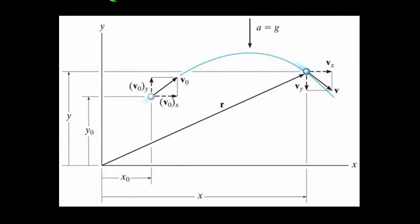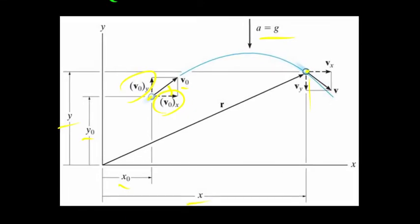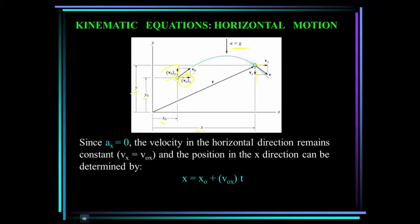Here is a particle projectile at position x0, y0, released with a velocity v0. We have the components of velocity in each direction — just like a force, multiply v0 by the cosine of the angle to get the x component. Since the acceleration in the x direction is zero, velocity in the horizontal direction is constant. We write x as a function of time: x equals the initial position plus the x component of velocity times time.